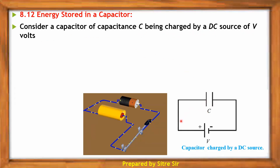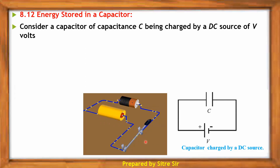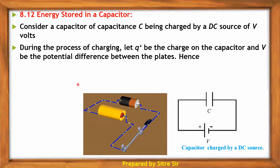During the process of charging, let Q' be the charge on the capacitor and V be the potential difference between the plates.